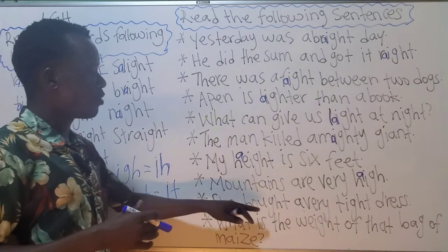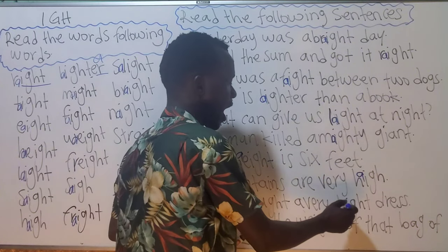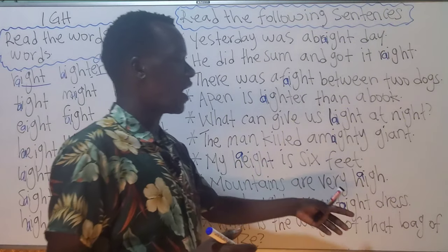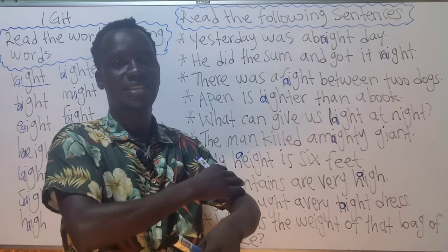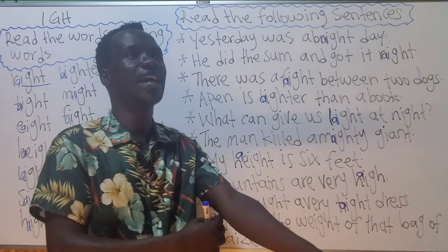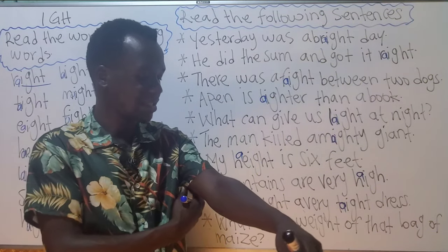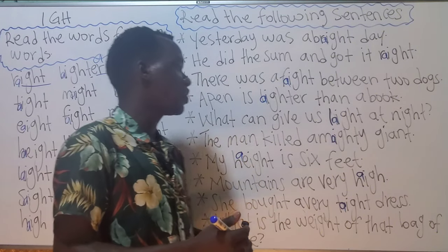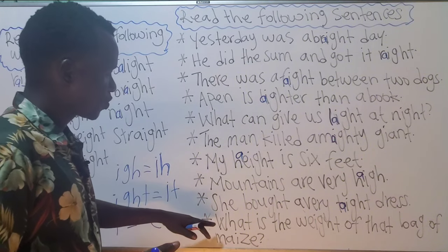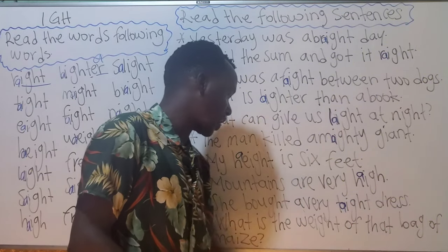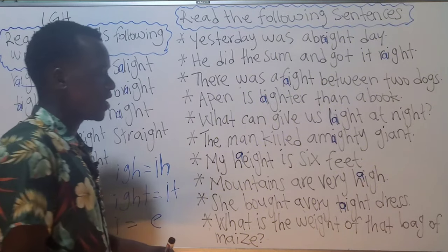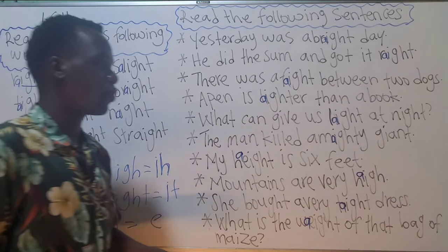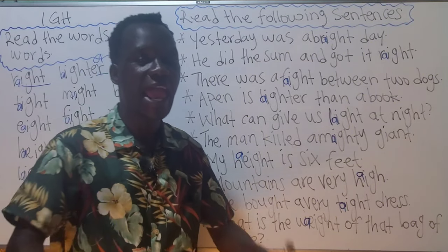Number nine: 'She bought a very tight dress' — invisible A here in 'tight.' Tight means a dress or cloth that sticks on you when you wear it — a fitted cloth. Number ten: 'What is the weight of that bag of maize?' Weight — invisible A between W and E. Weight is when we are talking about heaviness, how heavy something is.